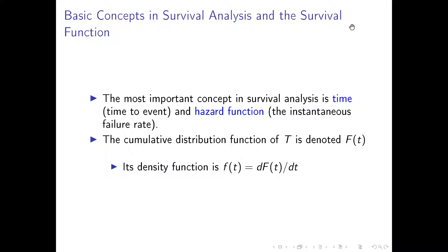Usually when we have a hazard function or hazard rate as our response quantity of interest, then we have the proportional hazard regression model. The hazard function is also often called the instantaneous failure rate.